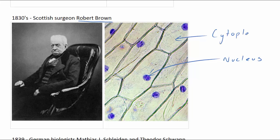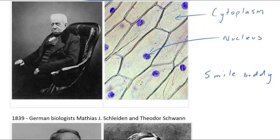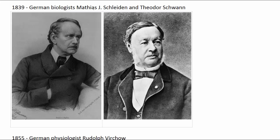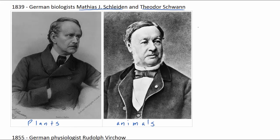You can still see these structures in biology class today using compound microscopes. In 1839, German biologist Matthias J. Schleiden and Theodor Schwann proposed a new theory based on many observations made with microscopes. Schleiden first noted that cells were the basic units of plants, and when Schwann compared animal cells to plant cells, they concluded that cells were elementary particles of organisms — the unit of structure and function.